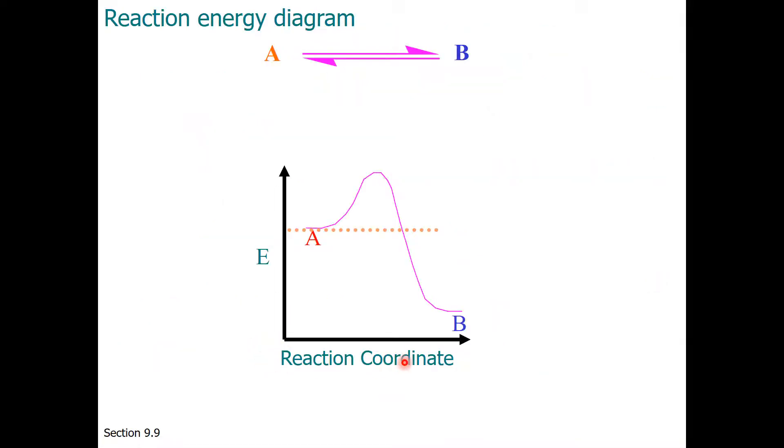A reaction coordinate diagram is where we can begin to think about the pathway taken to the reaction. On the x-axis is the reaction coordinate, so it is the progress going from reactant to product, and on the y-axis is the energy level of each stage. Many reactions are reversible.